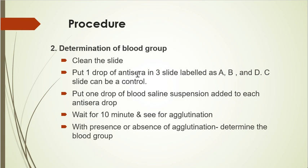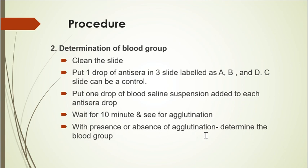For determination of blood group, clean the slide and put one drop of antisera in three slides - label anti-A in column A, anti-B in column B, and anti-D in column D. A separate control section can be made with suspension only. Add one drop of the blood-saline suspension to each antisera, mix, and wait 10 minutes, then observe for agglutination.